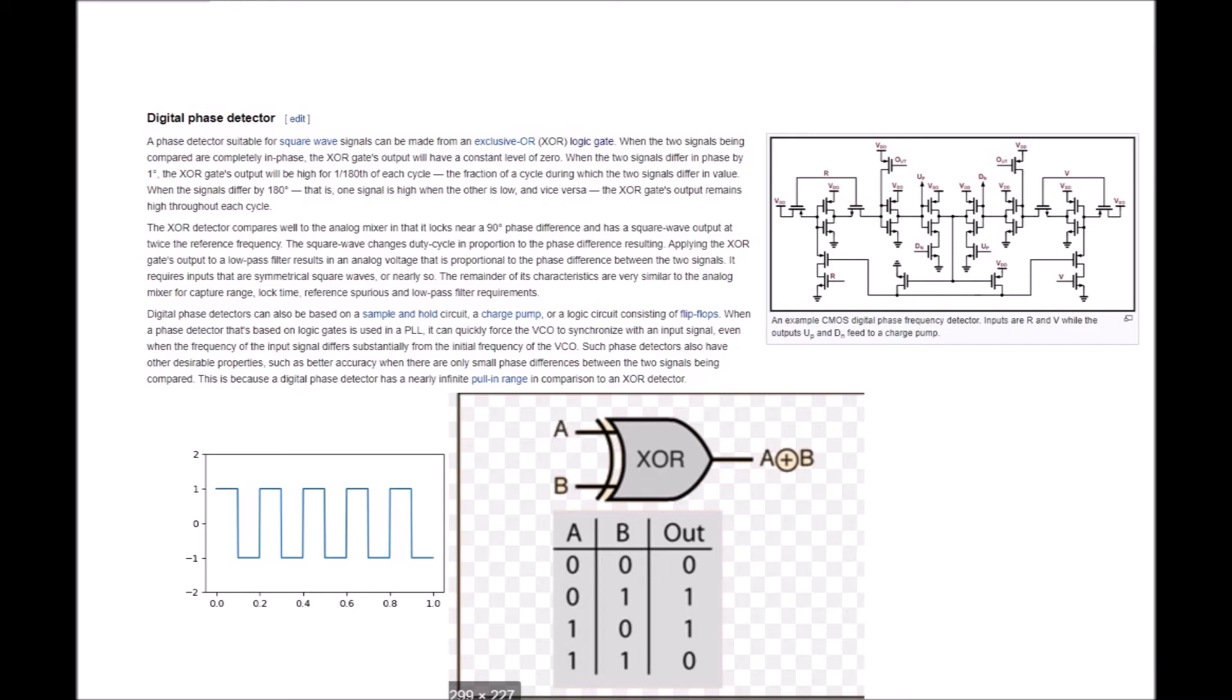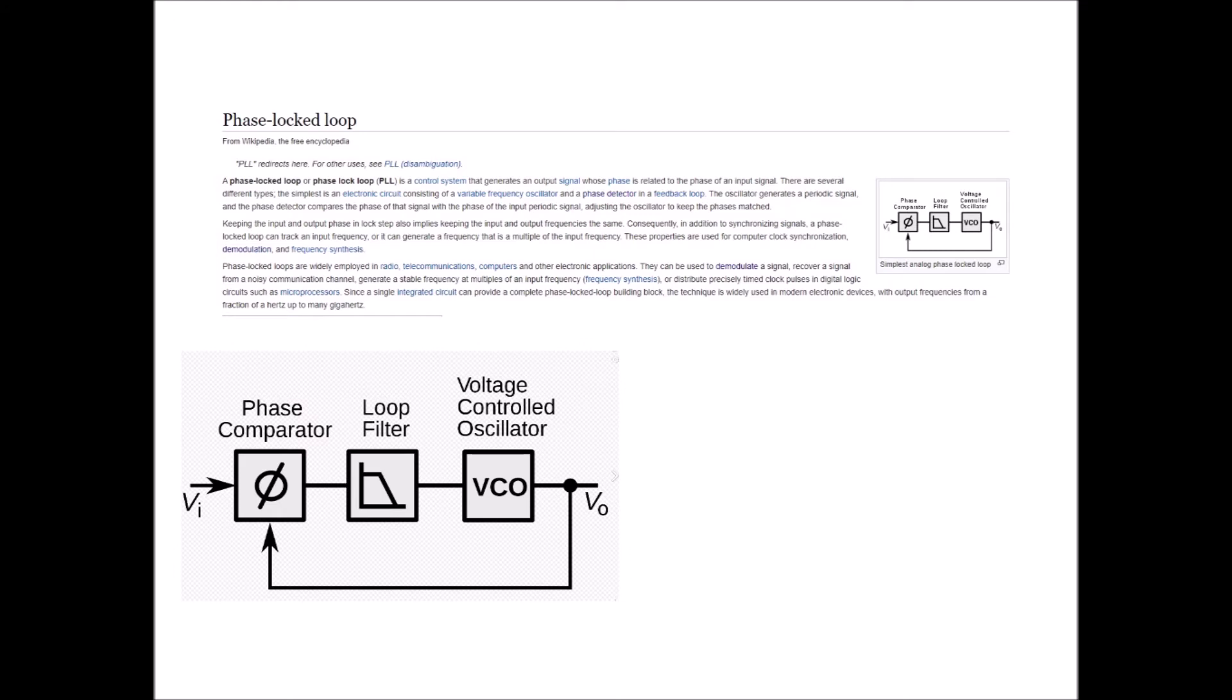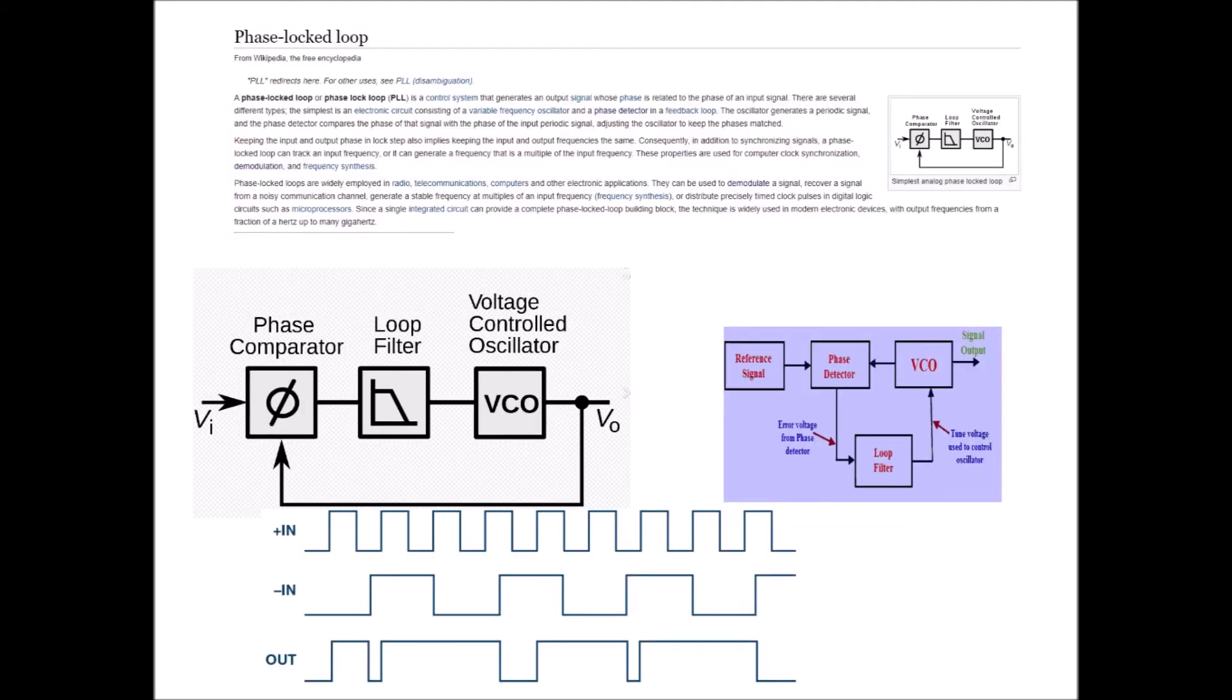Okay now I'm switching over to another Wikipedia article. Phase locked loop. A phase locked loop or phase lock loop PLL is a control system that generates an output signal whose phase is related to the phase of an input signal. There are several different types. The simplest is an electronic circuit consisting of a variable frequency oscillator and a phase detector in a feedback loop. The oscillator generates a periodic signal and the phase detector compares the phase of that signal with the phase of the input periodic signal adjusting the oscillator to keep the phases matched. Keeping the input and output phase in lock step also implies keeping the input and output frequencies the same. Consequently, in addition to synchronizing signals, a phase locked loop can track an input frequency or it can generate a frequency that is a multiple of the input frequency.